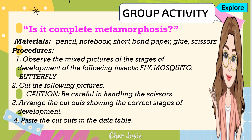For the group activity, the title is 'It is Complete Metamorphosis.' Here are the materials: pencil, notebook, short bond paper, glue, and scissors. After receiving the activity sheet, you're going to follow the procedures given. Always remember, if you use scissors, be careful in handling them. You may now start.